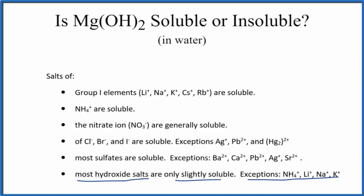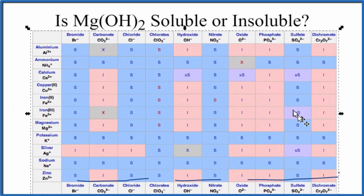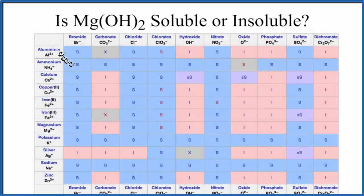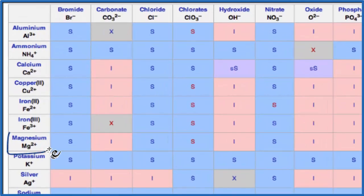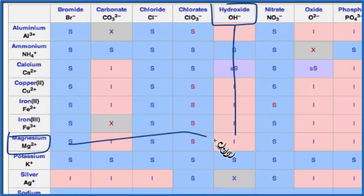We can also look at a solubility chart. So here's our chart and we'll find magnesium here with the positive ions. Here it is Mg²⁺ and then the hydroxide ion over here and we go over and down and we see that I there.